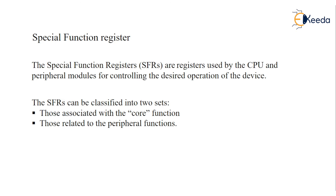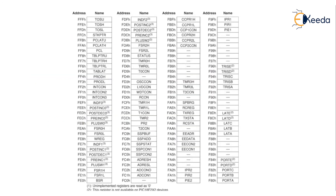Core functions include timers, serial communication, and interrupts, whereas peripheral functions include the ADC. The ports also have their own SFRs.